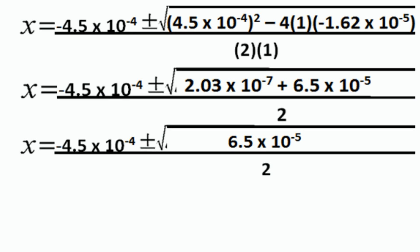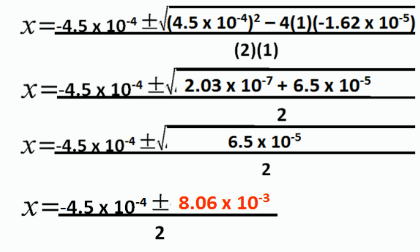Solving further, X equals negative 4.5 times 10 to the minus 4 plus or minus the square root of 6.5 times 10 to the minus 5, all divided by 2. In the final calculation, X equals negative 4.5 times 10 to the minus 4 plus or minus 8.06 times 10 to the minus 3, all divided by 2.